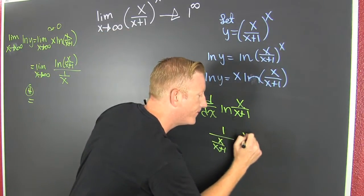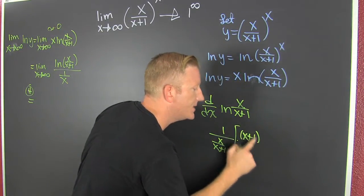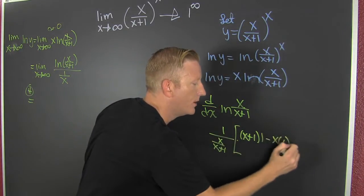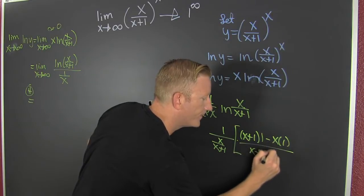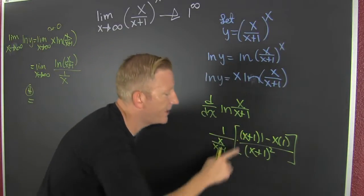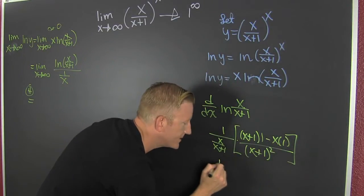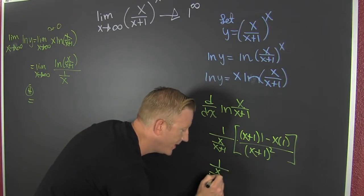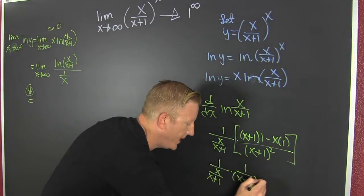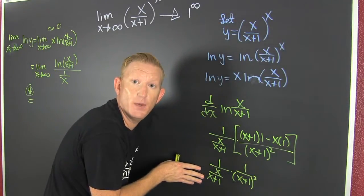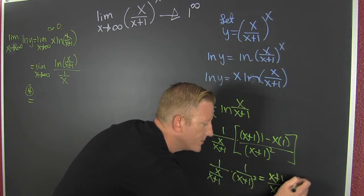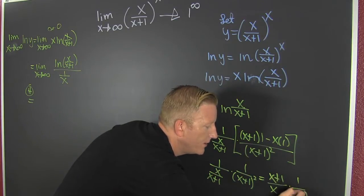So it's low d-high minus high d-low, all over low-low. Then we clean that up. X minus X — all my X's are gone and everything is right in the world. X plus one times this is one over X plus one squared. Dividing by a fraction is the same as multiplying by the reciprocal, and you get X plus one over X times one over X plus one squared.